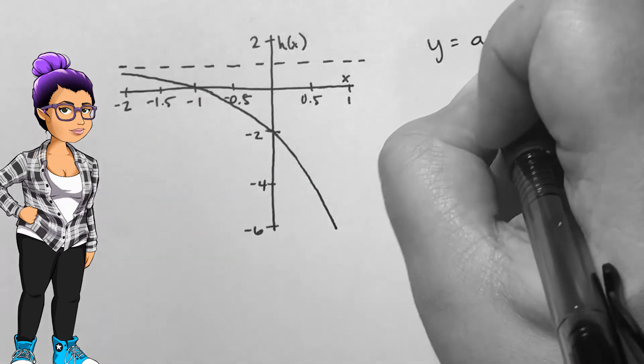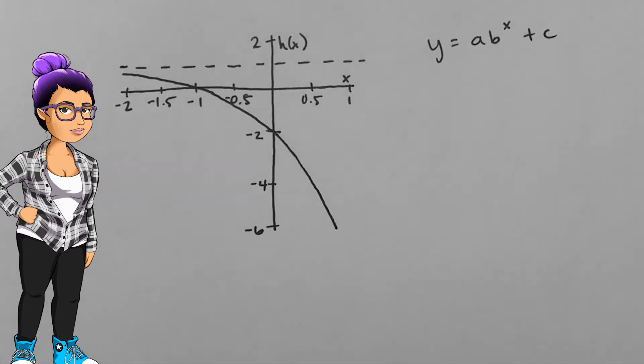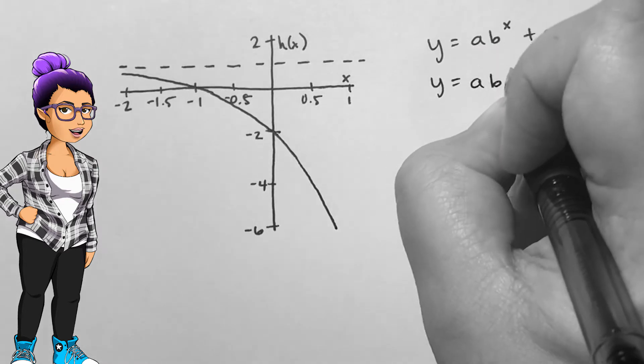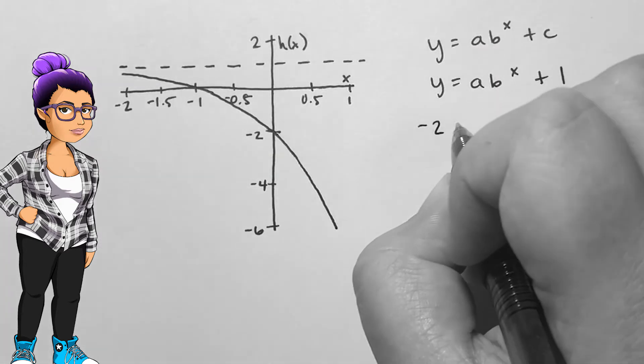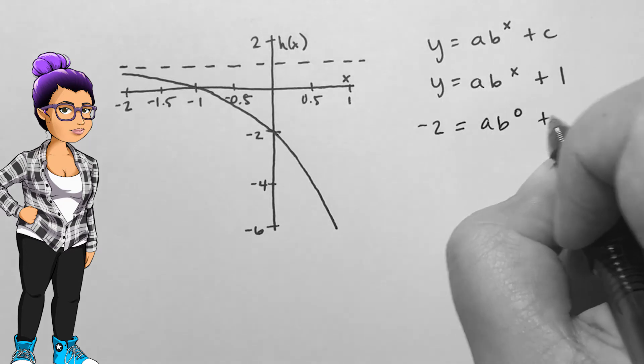The first thing I see is a horizontal asymptote at y equals 1. This is my c value. I also see that the graph is upside down with a y-intercept of negative 2. Negative 2 is not my a value though since the graph was shifted around.